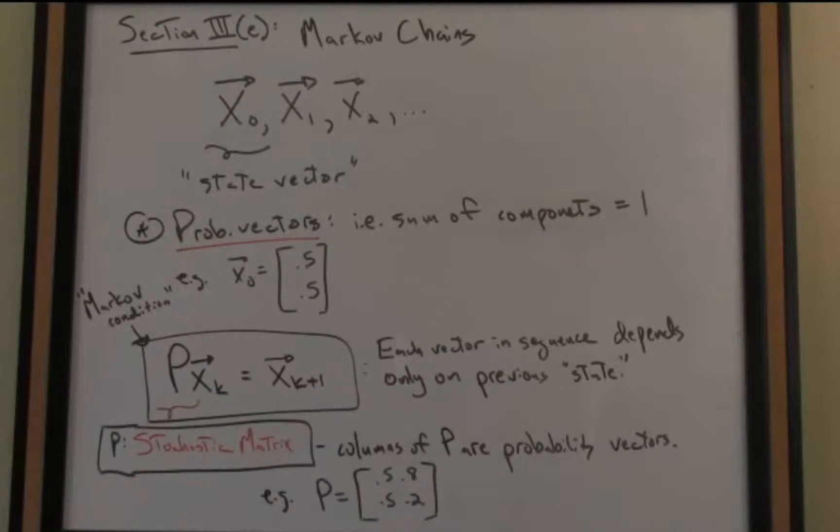Now, what's vital here in the definition of this Markov chain is, again, this Markov condition. You'll notice one of the consequences of that Markov condition is the following, and this could be called a model assumption for our Markov chain: that each vector, by definition, in our sequence depends only on the previous state.